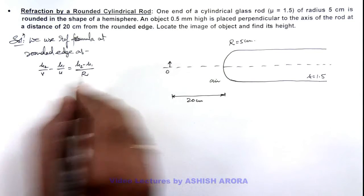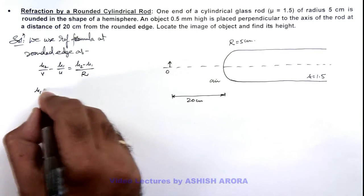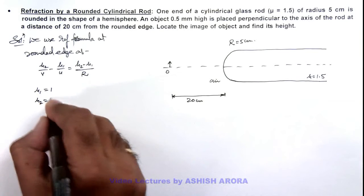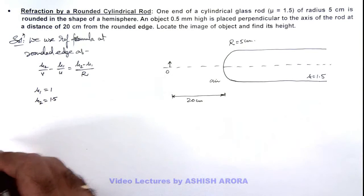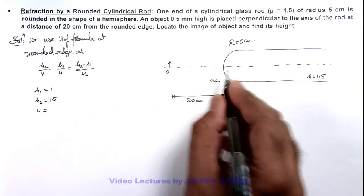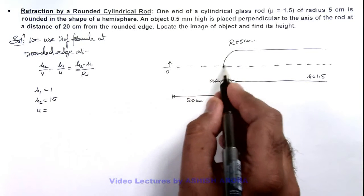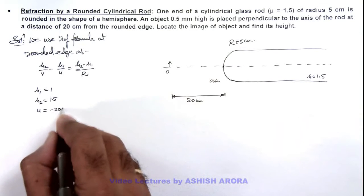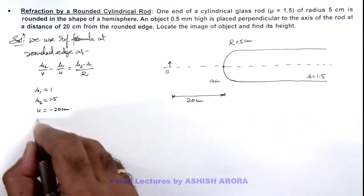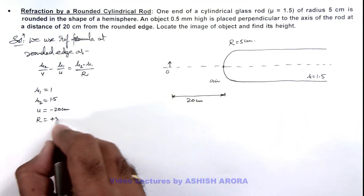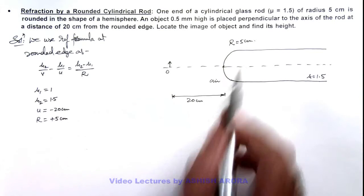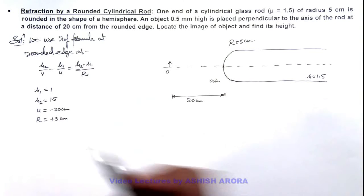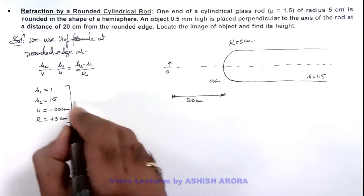In this equation if we substitute the values, μ₁ can be written as 1 because light is going from air to glass. Here μ₂ is 1.5. Here the value of u, the object distance from the optic center of this surface on the left side, u can be taken as -20 centimeters. And radius of curvature we take as +5 centimeters because it exists on the right side of the optic center, that is on plus x-axis. So if we substitute these values over here.